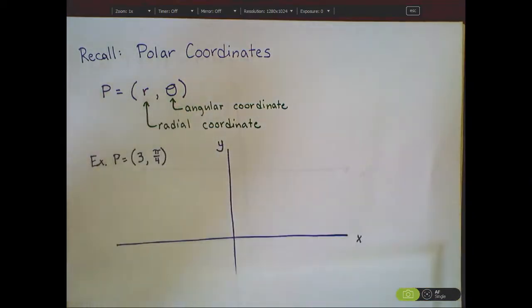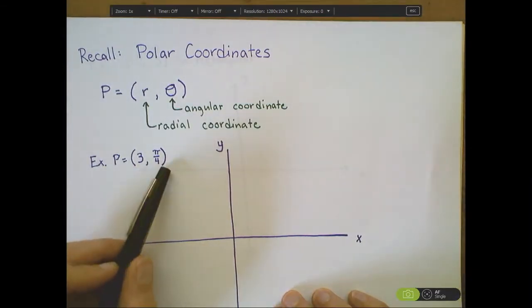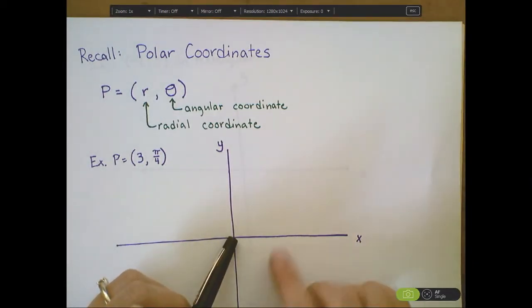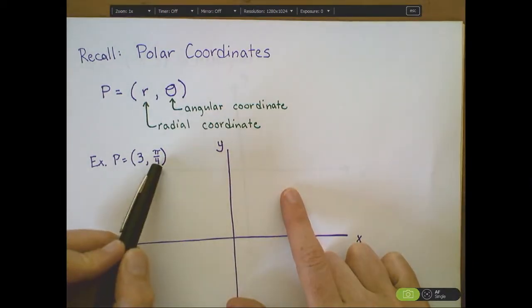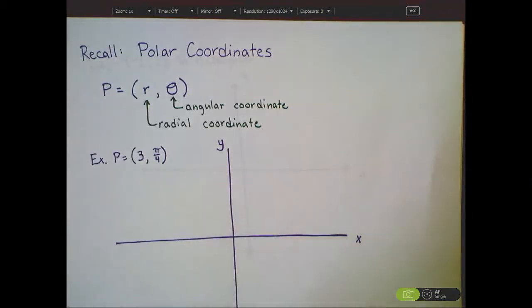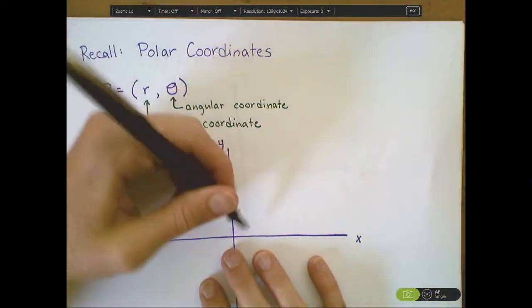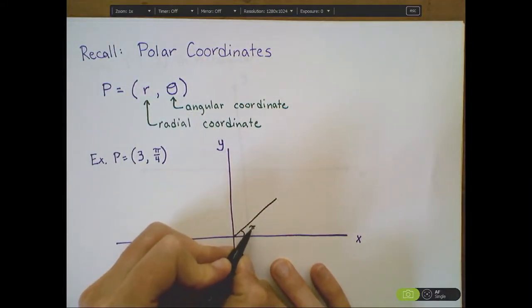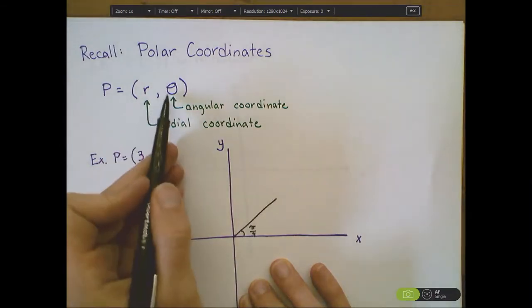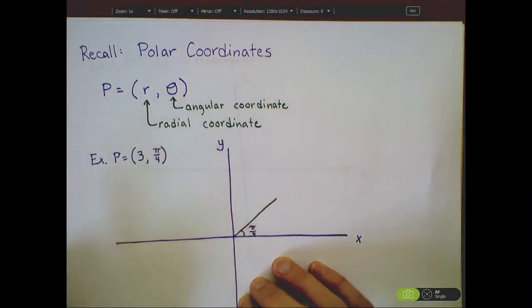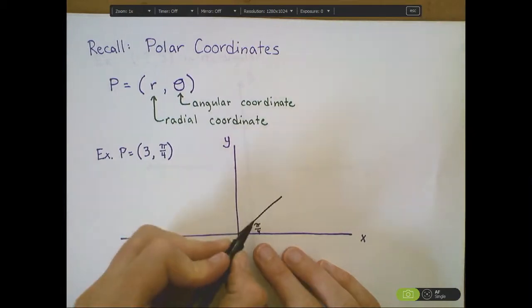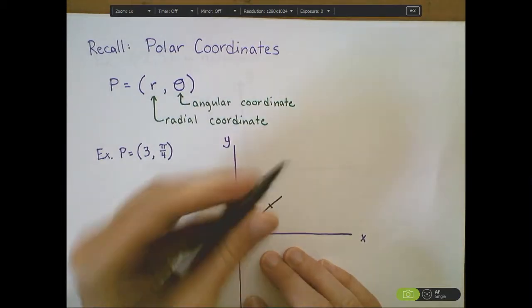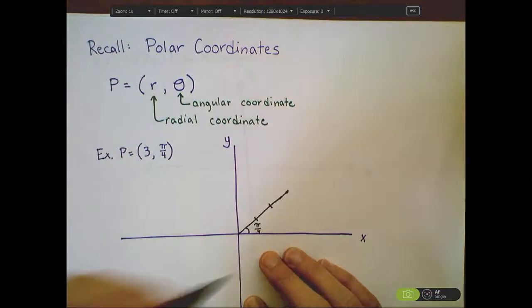For example, let's look at the point (3, π/4) written in polar coordinates. The first component tells us that the distance from the point to the origin is 3 units, and that the angle made with the x-axis is π/4. If I were to sketch a graph of this, I would trace out an angle of π/4, and typically we give this angular coordinate in radians, we don't use degrees.